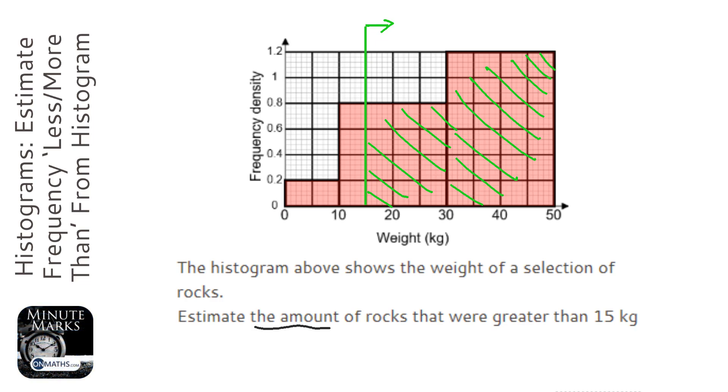We're going from 15 to 30, that's going to be a width of 15, and our frequency density is 0.8. So to work out that one, we're going to do 0.8 times 15. That's going to be for our first frequency.